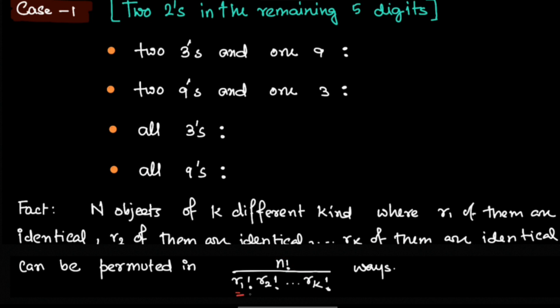Definitely r1 plus r2 up to rk should be n. r1 plus r2 up until rk equals n - that is true.